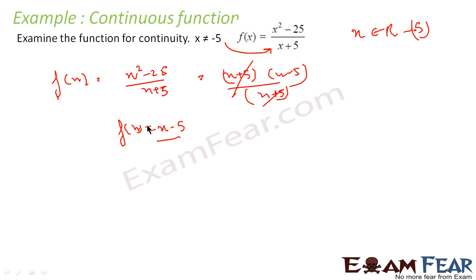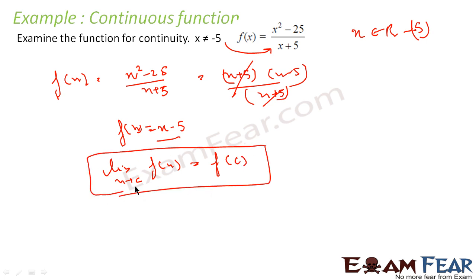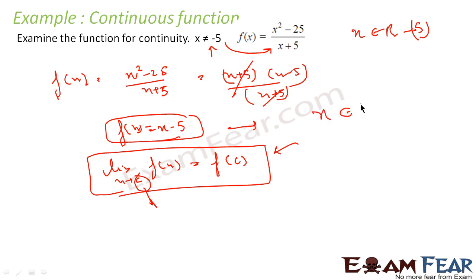I can prove this. For any polynomial function, the limit as x tends to c of f(x) is always equal to f(c). Because any polynomial function satisfies this. If this is true, I can say that for any point c, this function is continuous. Why could I not use the same formula for the original function? Because we had the constraint that x ≠ -5. But in the rewritten form, I don't have any constraint — x is any real number. So I can say this function is continuous, and since I got this equation just by rewriting, the original function is also continuous.